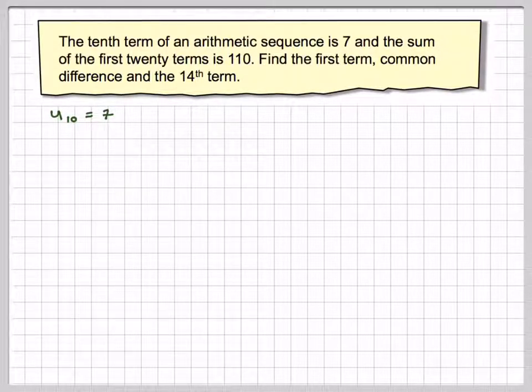So U10 is equal to 7, extracting the information from the question. The sum S20 is 110, and U1 we don't know, D we don't know, and we also have to find U14.